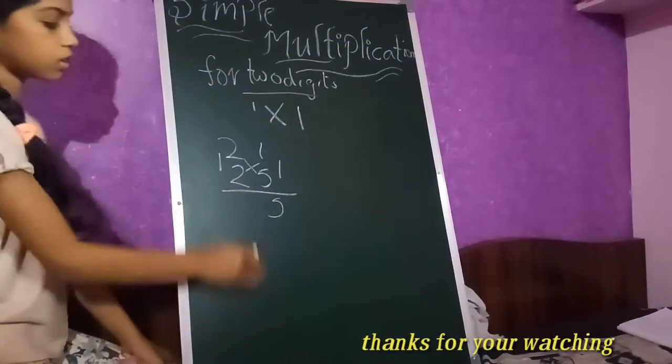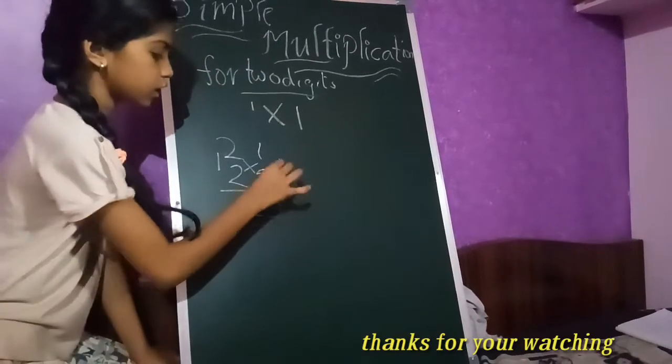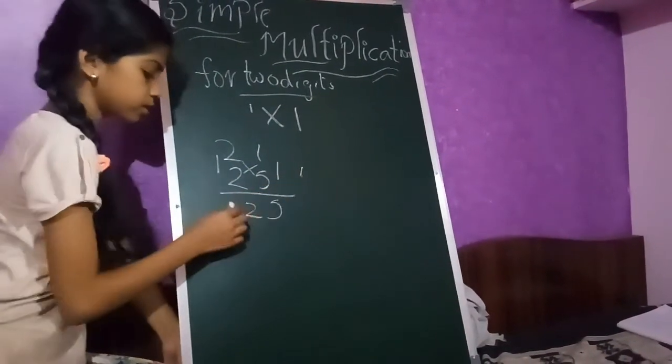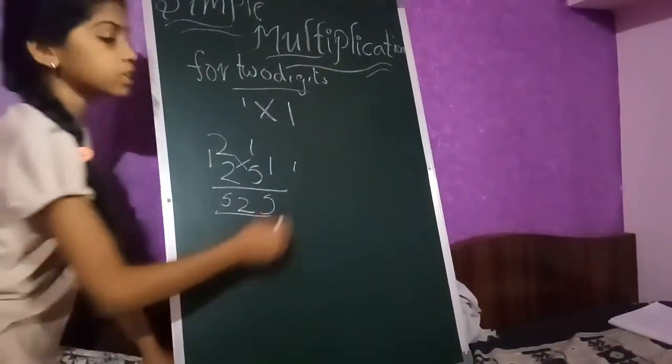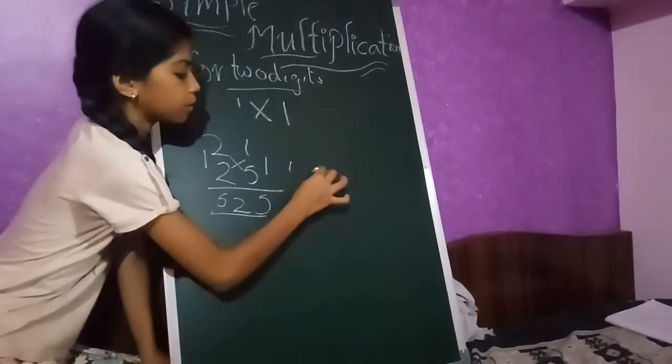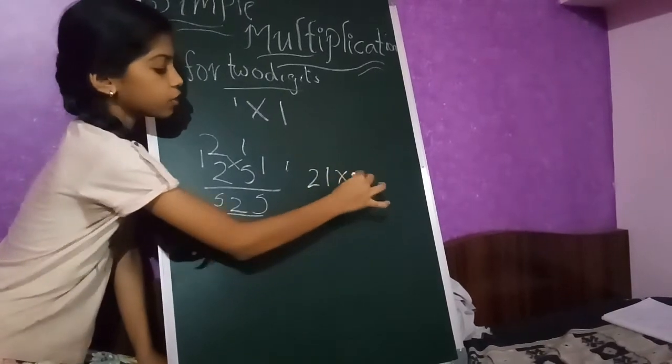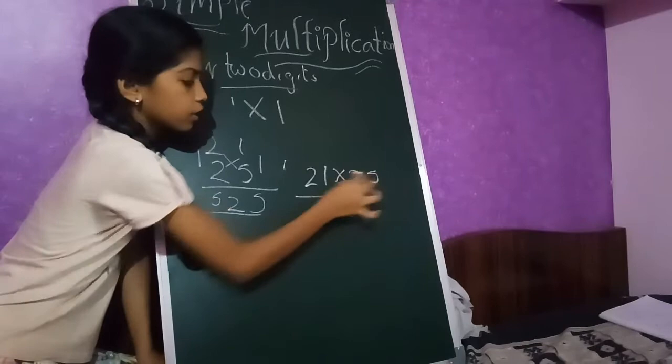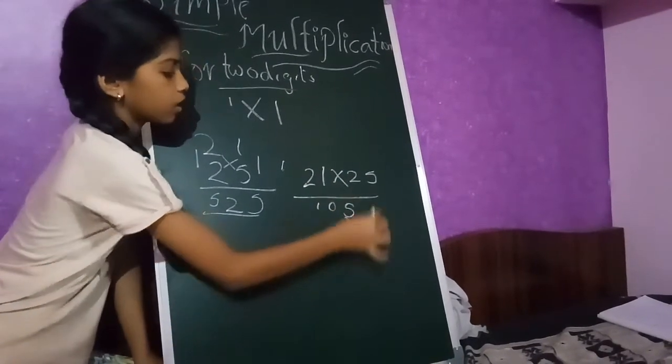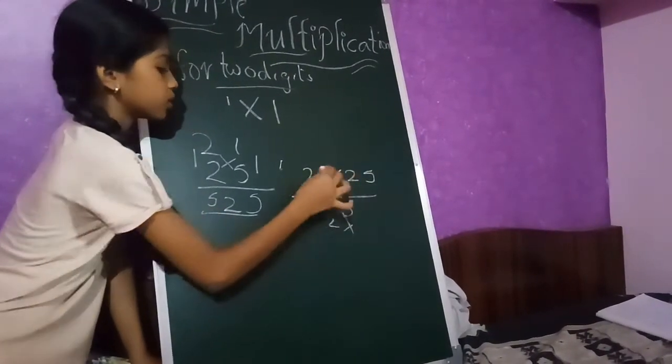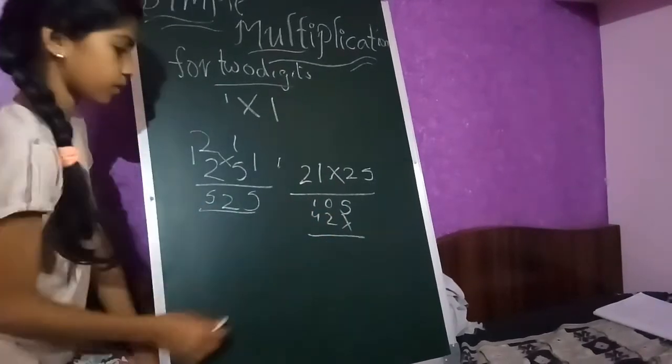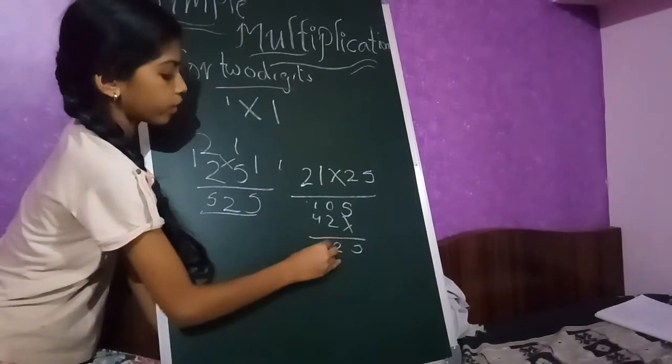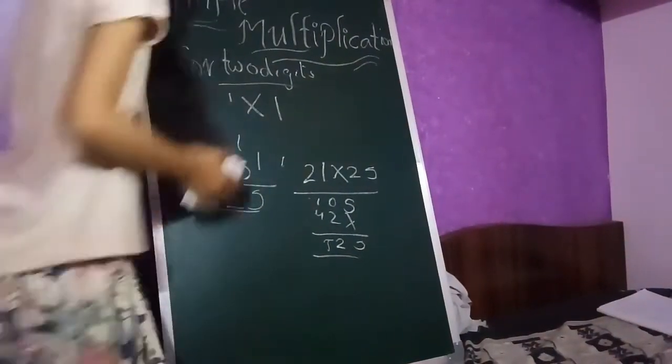12, you keep 1, 2, 2 are 4, plus 1, 5. 525. Let's verify this number. 21 into 25. 1 into 5 are 5, 5 times 2 are 10, 2 into 2 are 4. See friends, 5, 2, 5. See, it's correct.